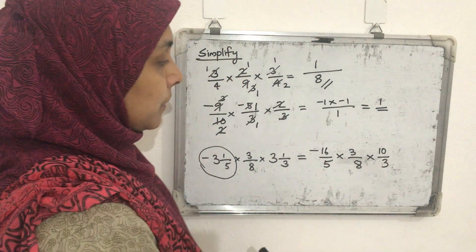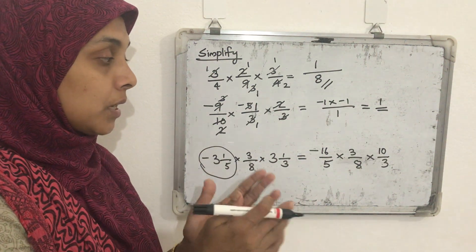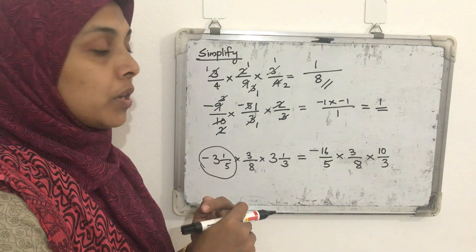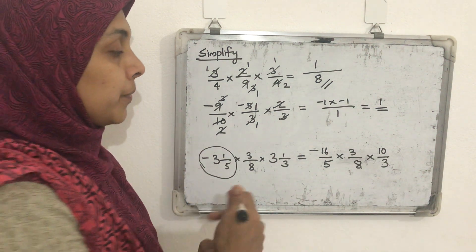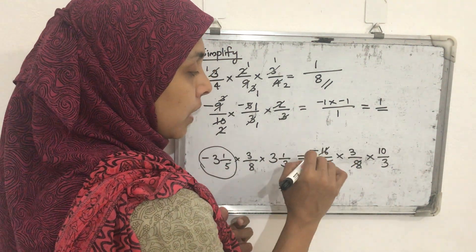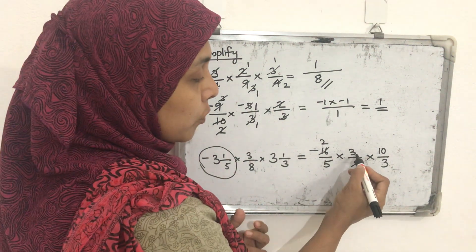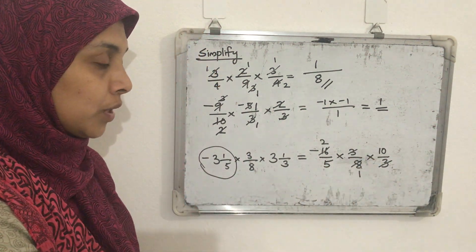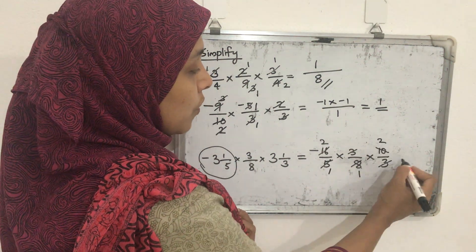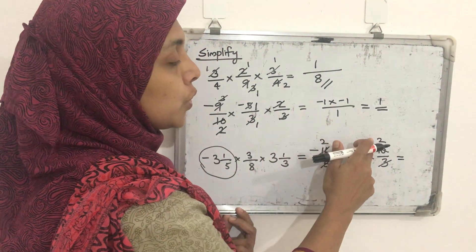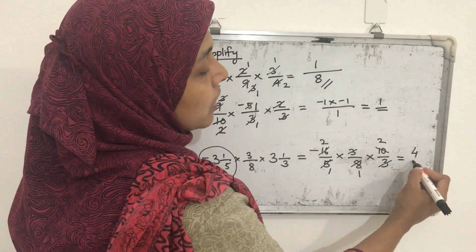Now find the common factors. 16 and 8 have common factors 2, 4, and 8; the highest common factor is 8. Dividing both by 8 gives 2 and 1. Then the numerator 3 and the denominator 3 cancel. Then 10 and 5 share the common factor 5: dividing gives 2 and 1. The remaining numerator is 2 × 1 × 2 = 4, and the denominator is 1. So the answer magnitude is 4.